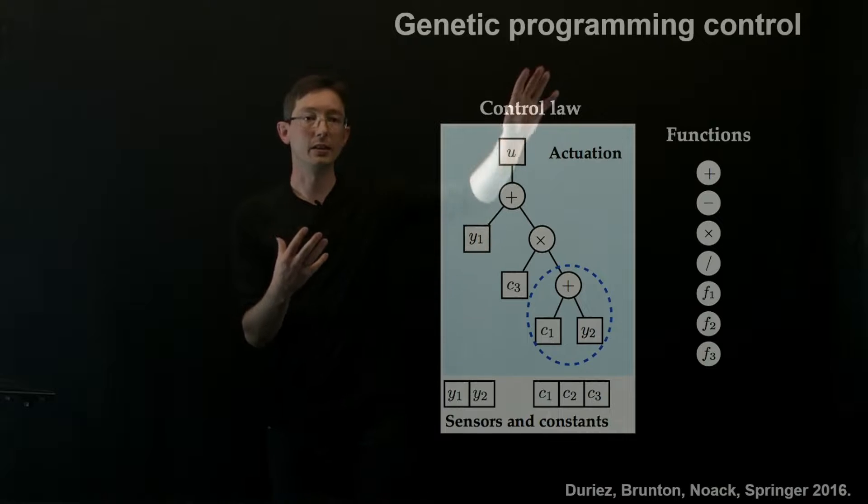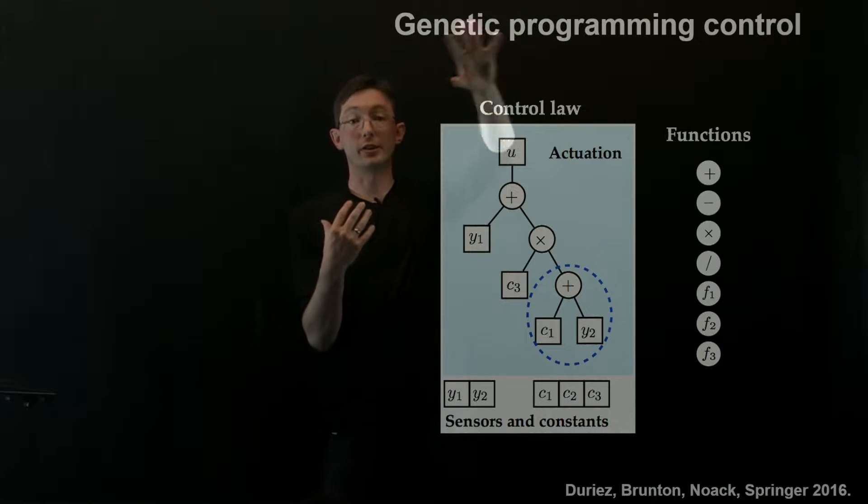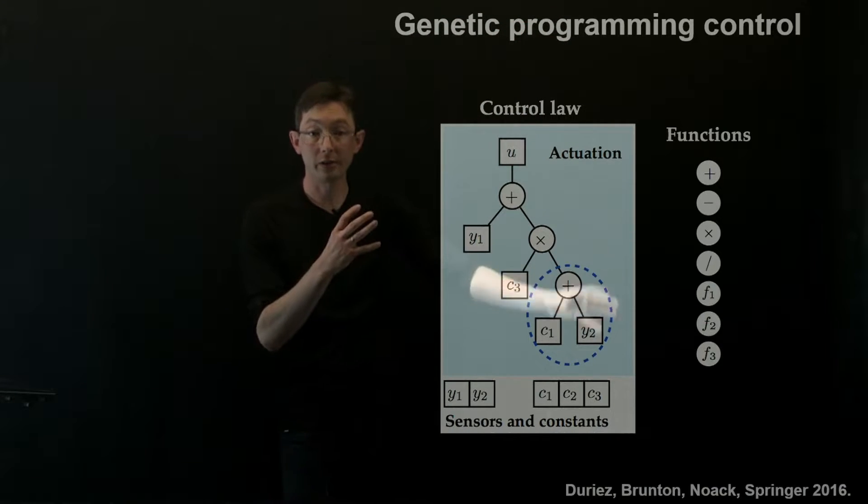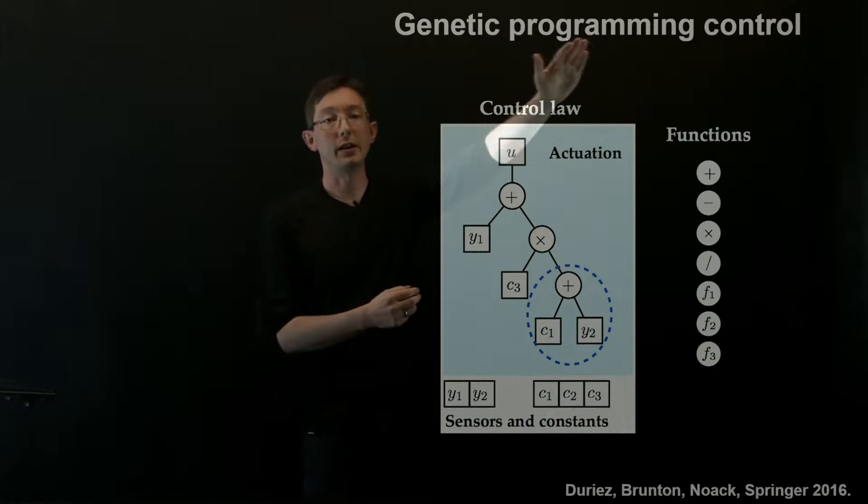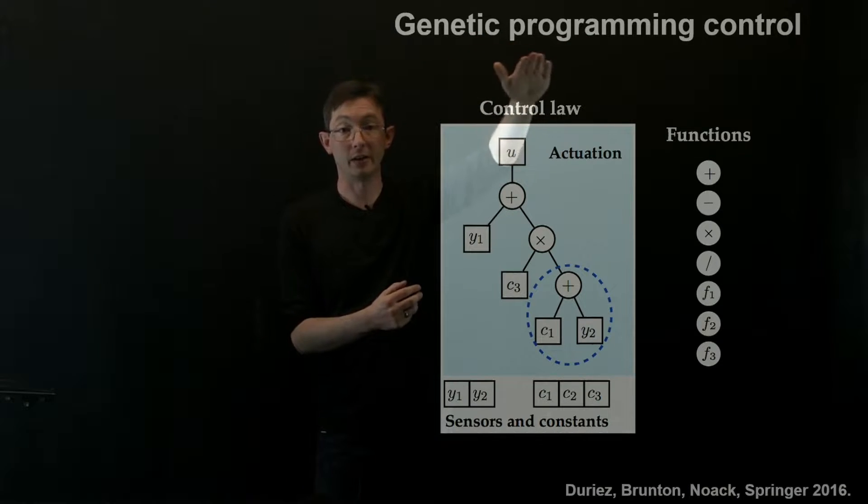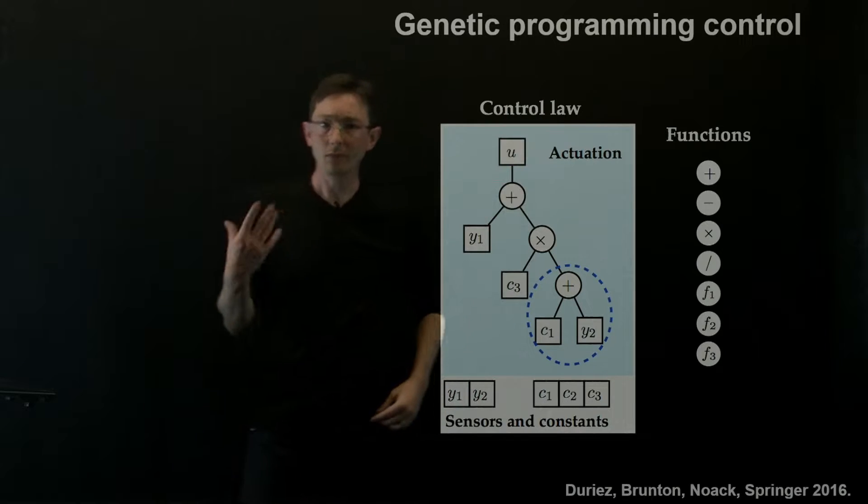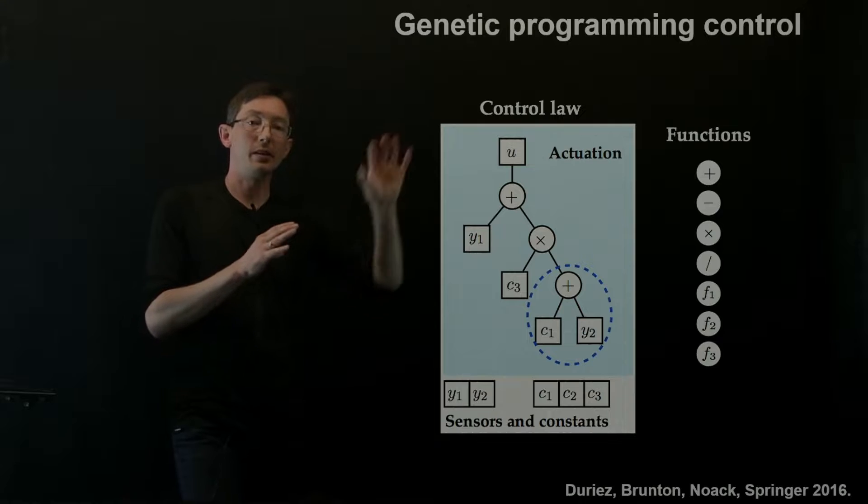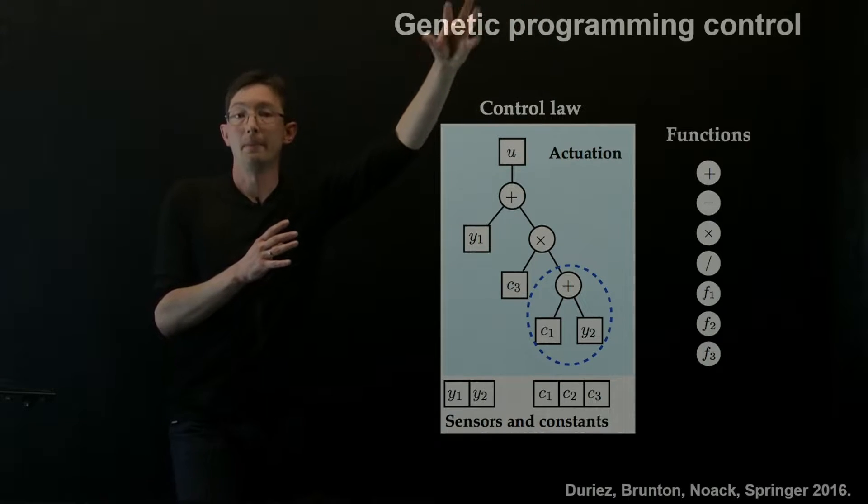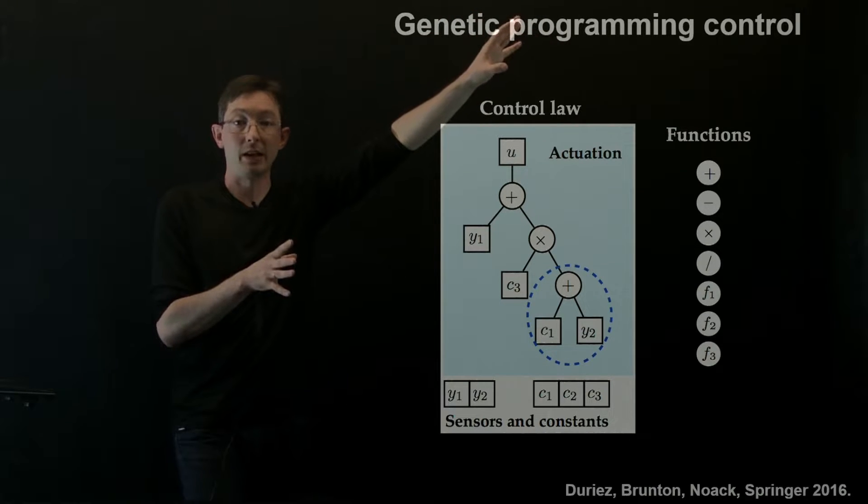But the basic idea here is maybe I don't know the structure of my control law, so I have to learn the structure of what control structures are actually effective. And so I need these kind of bigger machinery of genetic programming. So I'm going to walk you through genetic programming, just like genetic algorithms. This is a much bigger theory than just applying it to control systems.